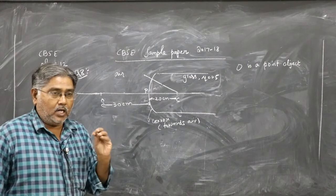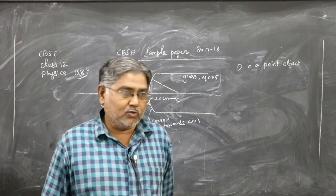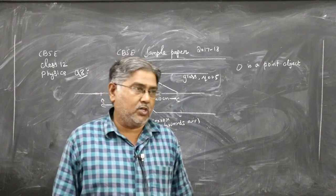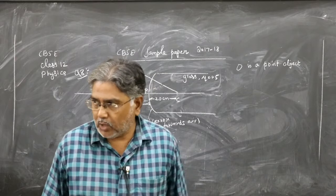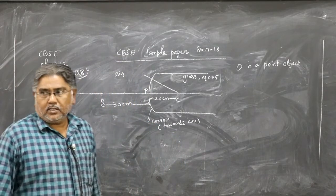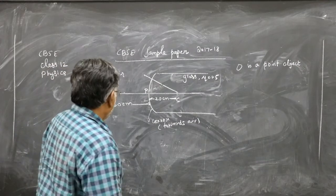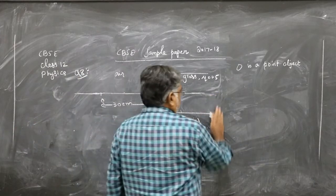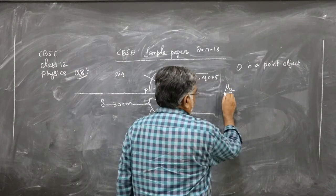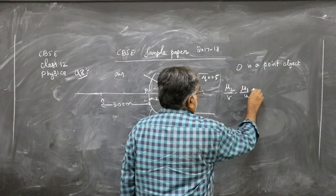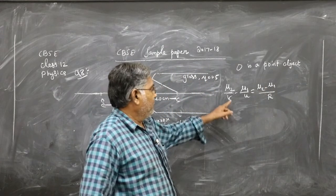Do not use the lens formula 1/f = 1/v − 1/u, or the lens maker's formula 1/f = (μ−1)(1/R₁ − 1/R₂). This is a common confusion. Don't use any lens maker's formula here. Simply use the formula for refraction at a single refracting surface: μ₂/v − μ₁/u = (μ₂ − μ₁)/R.